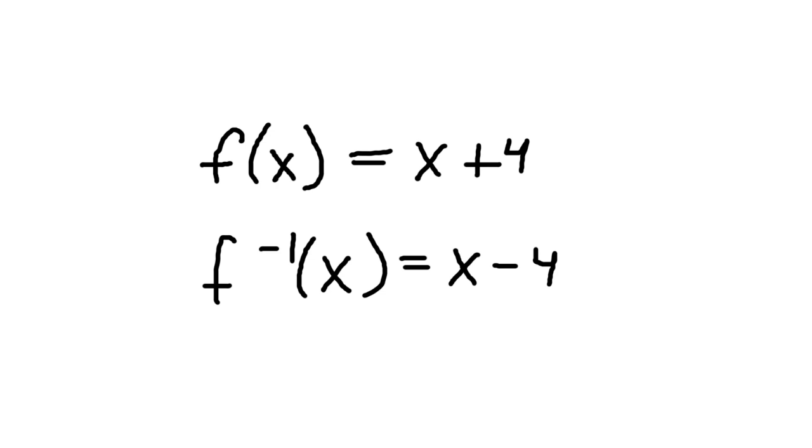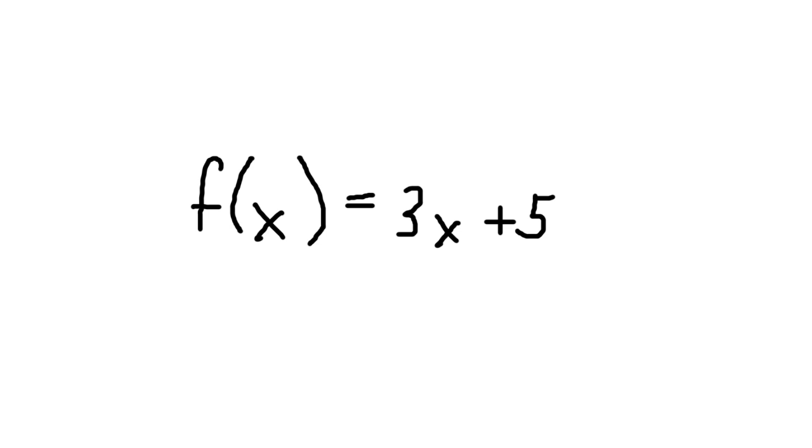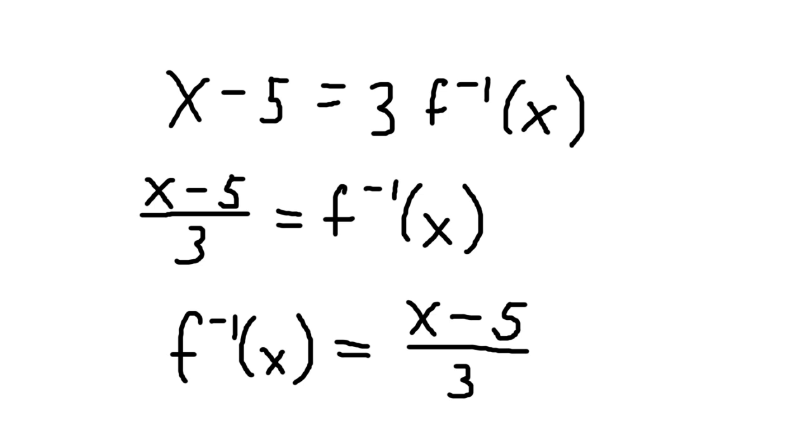So how can we do this with more complex expressions like f of x equals 3x plus 5? Here's what we do. Since the inverse function does to x as x does to the function, then we can replace f of x with x and the original x's with f inverse of x. We then isolate the inverse function candidate.